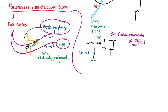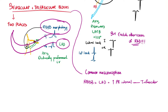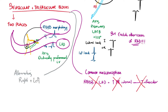The last topic today is trifascicular block. There is a common misconception that if there is a right bundle branch block morphology, left axis deviation, and a prolonged PR interval signifying an AV block, this is known as trifascicular block — but that's not actually the case. True trifascicular block is when you can prove alternating right and left bundle branch block morphologies, either beat-to-beat or on two ECGs taken 30 minutes apart showing LBBB on one and RBBB on the other. In either case, the patient will need pacing.